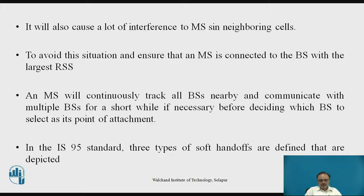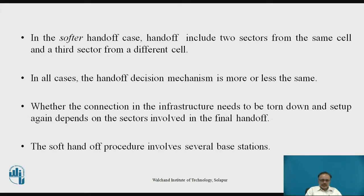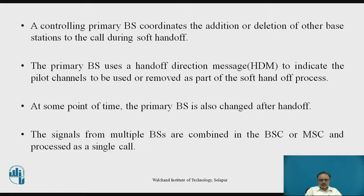In IS-95 standards, three types of soft handoffs are defined. In the softer handoff case, the handoff includes two sectors from the same cell and a third sector from a different cell. In all cases, the handoff decision mechanism is more or less the same. Whether the connection in the infrastructure needs to be torn down and set up again depends on the sectors involved. The controlling primary BS coordinates all addition and deletion of other base stations to the call during soft handoff.